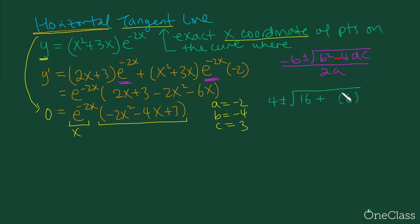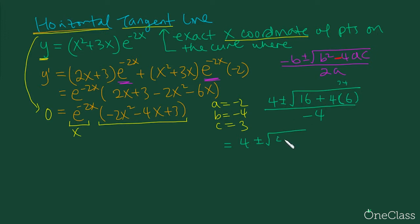It's safer to write things down rather than take shortcuts. With the negatives, −4ac cancels the negative sign, giving us 4 ± √(16 + 24) over 2a, which is negative 4. So we get 4 ± √40 over −4. We can simplify √40 as √4 · √10, which equals 2√10.